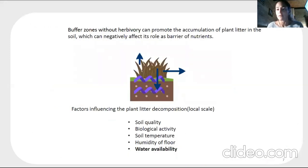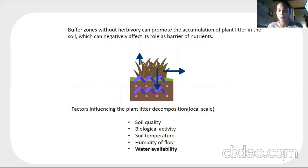Buffer zones without livestock or other management can promote the accumulation of plant litter in the soil, which can negatively affect their role as a nutrient barrier. This is because while the litter decomposes, it can release nutrients to the environment. The most important factor influencing plant litter decomposition is water availability in the area.